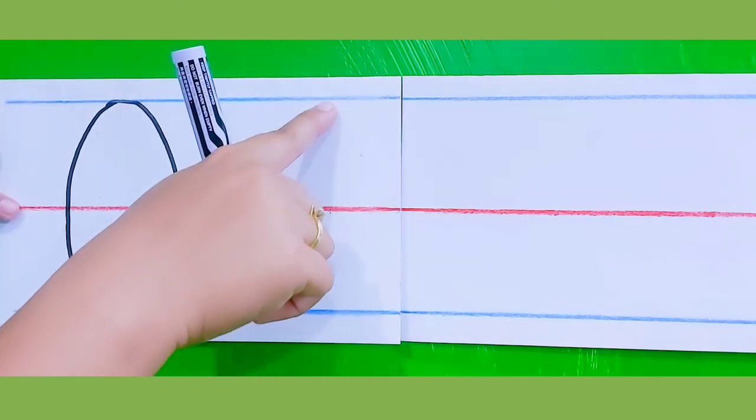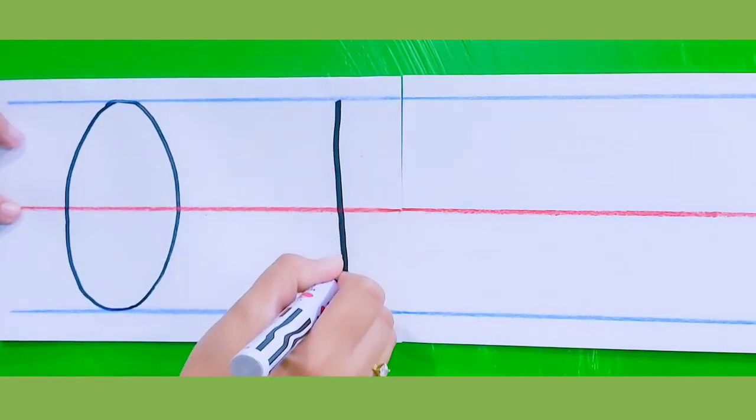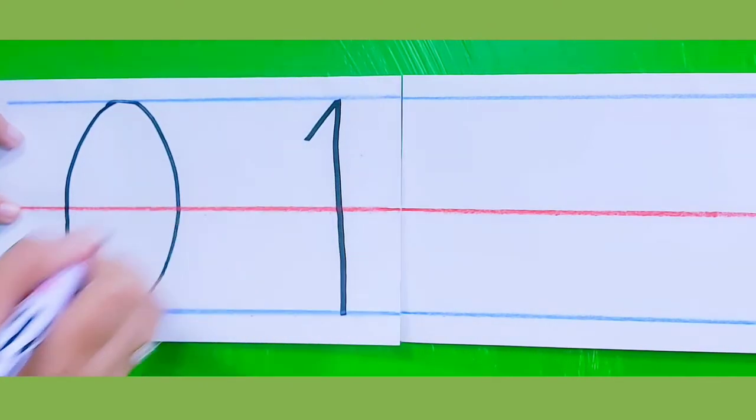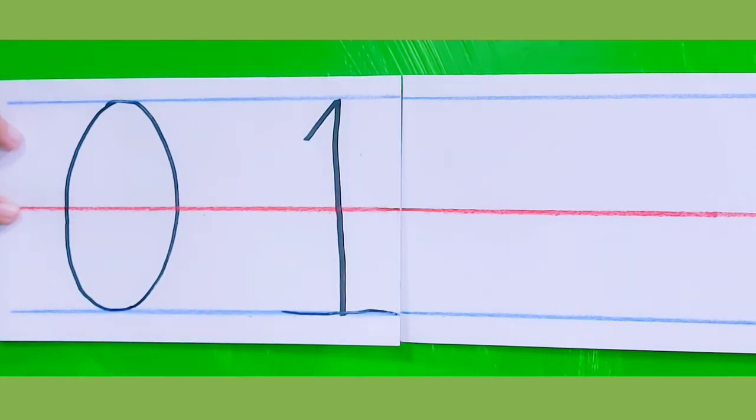For number one, make a straight line going down, and small slant line going to the left side, and left to right.